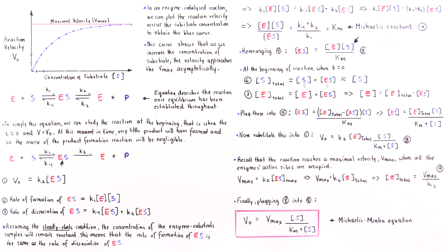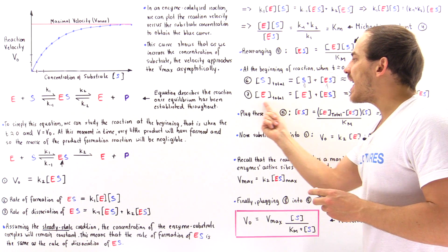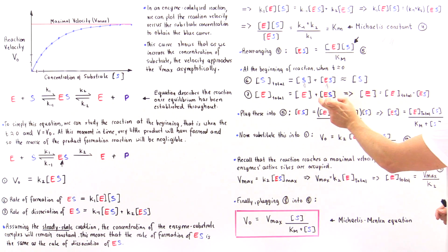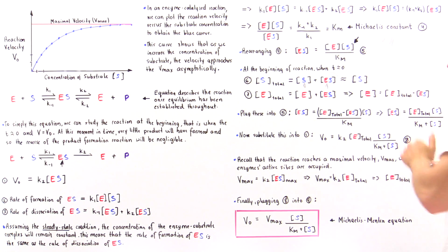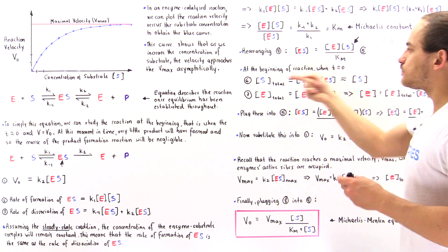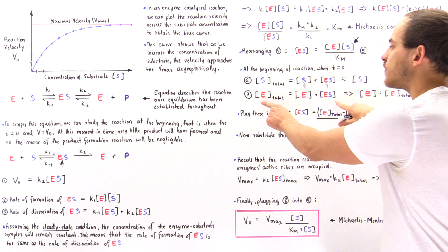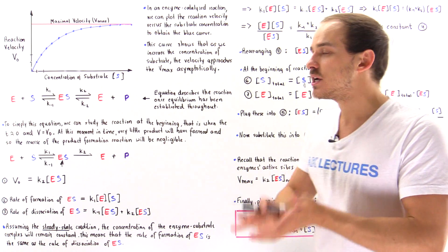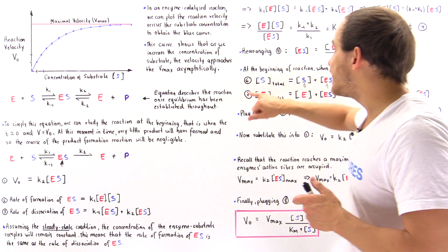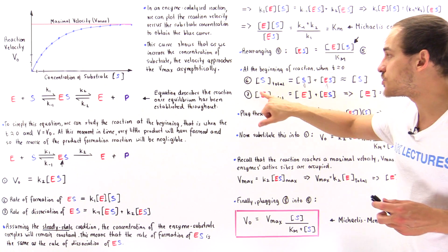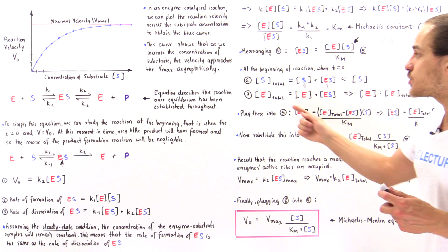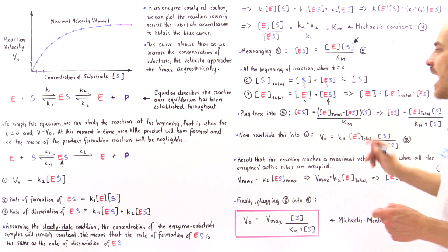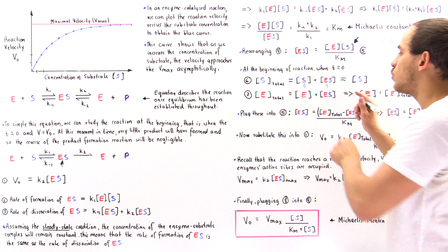Now let's move on to equation seven. By the same analogy, we see that the total enzyme inside our mixture is equal to the enzyme that is not bound to the substrate plus the enzyme that is bound to the substrate. Now the same assumption we just made we cannot make for the enzyme case, and that's because the concentration of the enzyme is usually much much smaller than the concentration of the substrate. For instance, we can have a million substrate molecules but only 100 enzyme molecules. So we can no longer assume that this is much smaller than this, and in this particular case we actually have to leave the equation as it is.